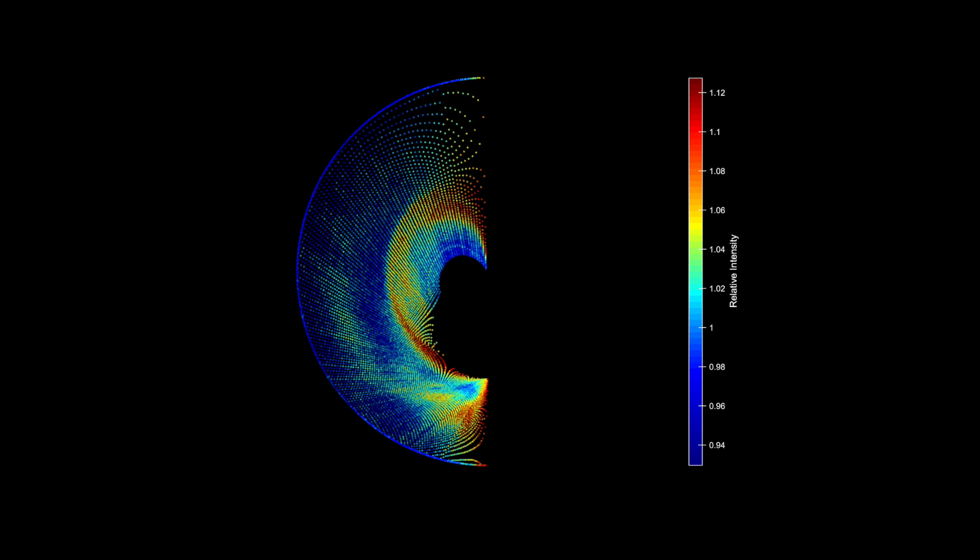See those arcs of higher density? Those are sections of spiral arms in our very own galaxy. We managed to paint a partial portrait of the Milky Way without even having to leave the MIT campus.